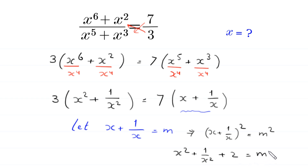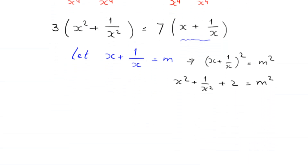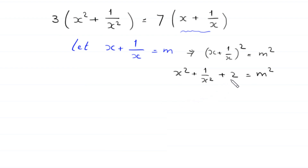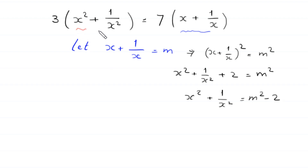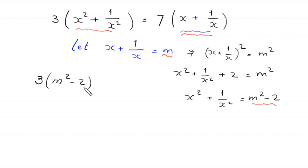This is equal to m squared. Now, we move this plus 2 to the right side, then here we are left with x squared plus 1 over x squared is equal to m squared minus 2. Now, we replace x squared plus 1 over x squared with m squared minus 2, and we replace x plus 1 over x with m, then this equation will become 3 times m squared minus 2 is equal to 7 times m.